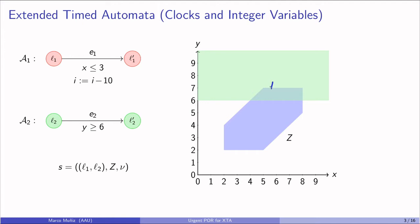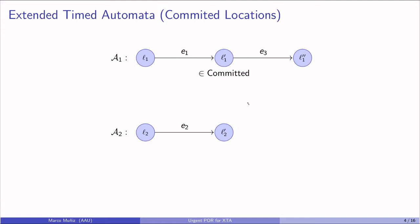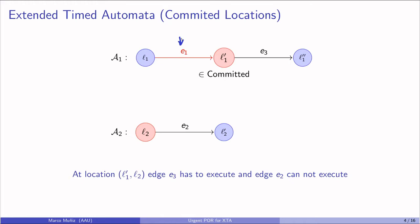There are committed locations. For example, note that if E1 is executed, then L'1 belongs to the committed locations, and by the semantics, what is going to happen is that E3 has to be executed immediately, and it's going to disable this edge temporarily.